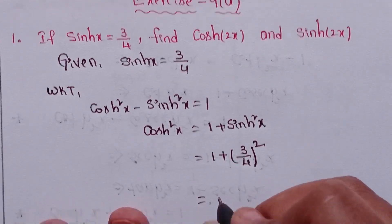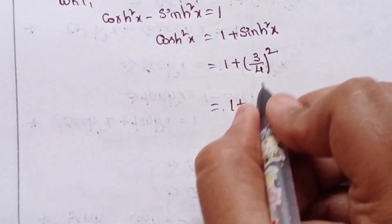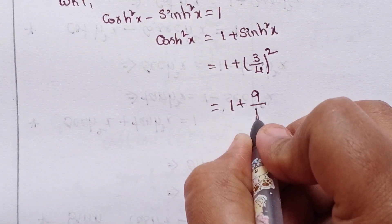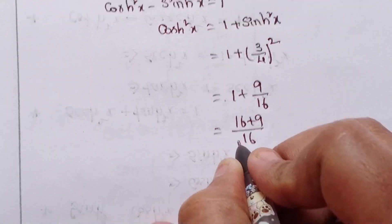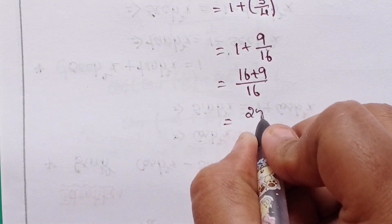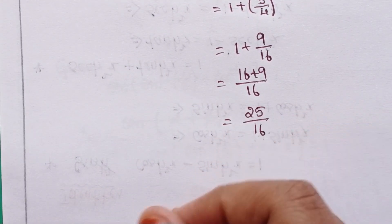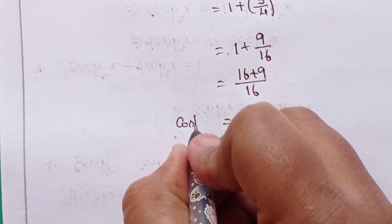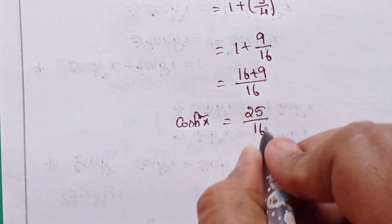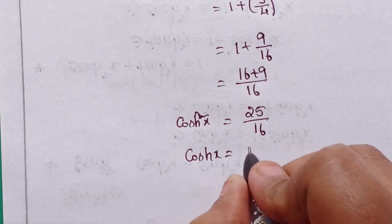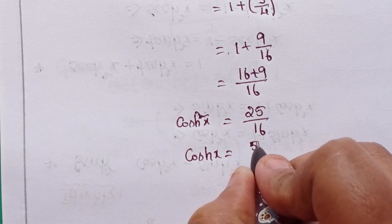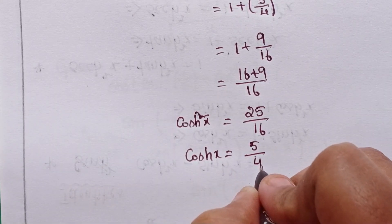That means 1 plus 3 squared over 4 squared, which is 1 plus 9 by 16, equals 16 plus 9 by 16, which is 25 by 16. So cosh squared x value is 25 by 16, and cosh x value is 5 by 4.